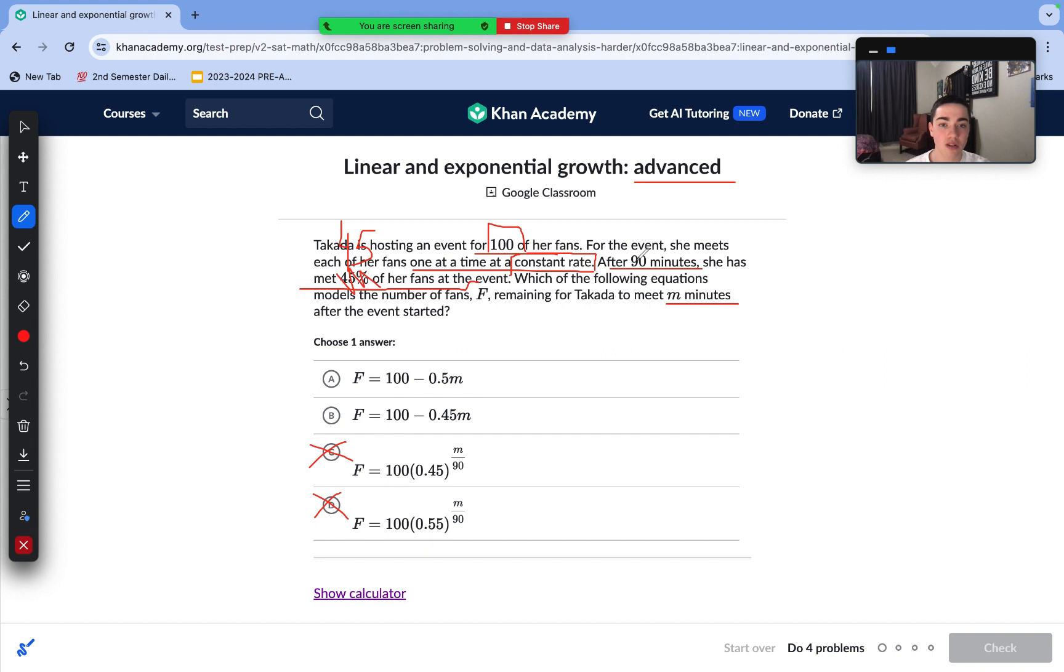So now we can just substitute in 19 for X, well, 19 for M, as that's a minute value, and 45 for F. And then we can see which of these two linear equations satisfies this relationship.